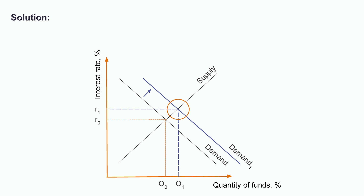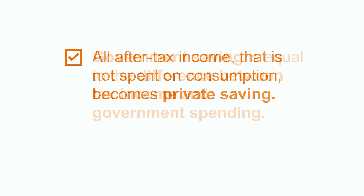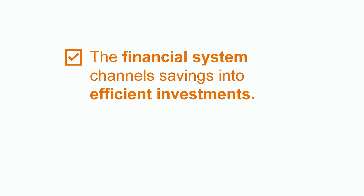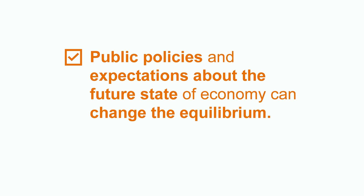A quick recap: all after-tax income that is not spent on consumption becomes private saving. Government saving is equal to the difference between tax income and government spending. The financial system channels private and public savings into efficient investments. The amount of funds borrowed on the market and their rate are decided by equating supply and demand. Public policies, such as changes in taxation, and expectations about the future state of the economy can change the equilibrium. Today we discussed how the financial system turns savings into investments and how the market for loanable funds operates. Thanks for watching. Check out Chegg for more resources on macroeconomics.